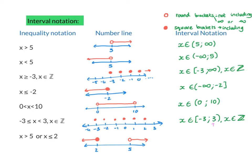For the integer example with the selected region, x is an element of [negative 3, 3) with x as an integer — noting that using 2 with a square bracket would actually give the same answer. For the last compound inequality, I write two separate intervals: x is less than or equal to negative 2 gives (negative infinity, negative 2], or x is greater than 5 gives (5, infinity). Later in math, some people use the union symbol instead of 'or', but for now just stick with the word 'or' and you'll be fine.